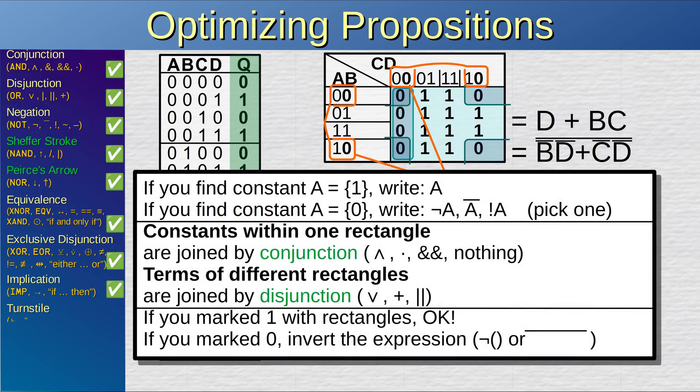Notice that it is just a coincidence that in this case, all variables were 1 when collecting ones and 0 when collecting zeros — it isn't necessarily that way. If you find a constant 1, you mark the name of that input. If you find a constant 0, you mark the name of that input inverted. Join the variables with a conjunction when they were together within a rectangle, and the different term groups with disjunctions. Finally, if you were collecting zeros, invert the entire expression.